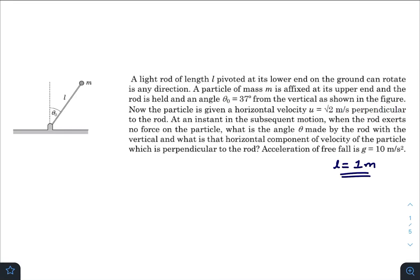Hey, what is up everyone, I hope all of you are doing great. In today's question we have a light rod of length L pivoted at its lower end on the ground that can rotate in any direction. This is connected at the lower end of the ground and it can rotate in any direction, meaning it is free to move in a hemispherical surface.